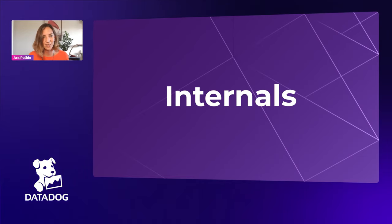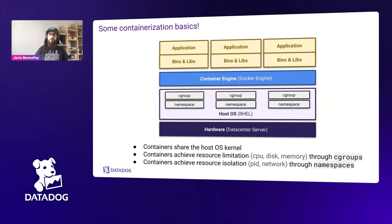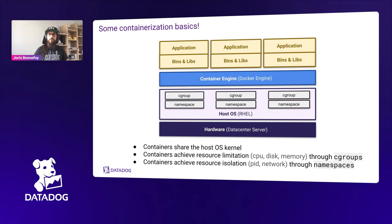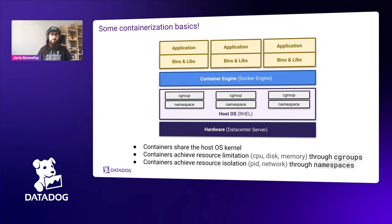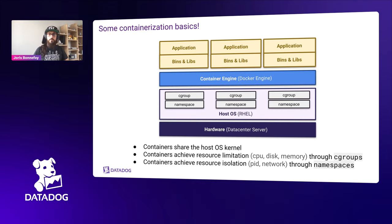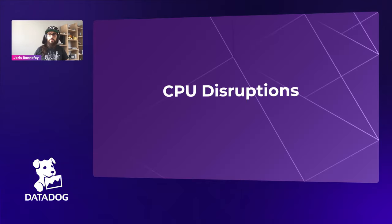Let's start with some basics about containers — specifically Linux containers. Linux containers use kernel built-in features, most importantly cgroups and namespaces. Cgroups are used for resource limitation — CPU, disk, or memory limitation of a specific container — while namespaces are used for isolation, for example isolating the network stack. These mechanisms help us limit blast radius in chaos engineering.